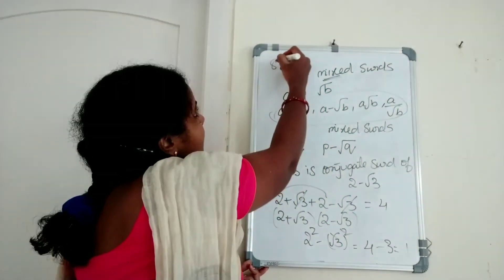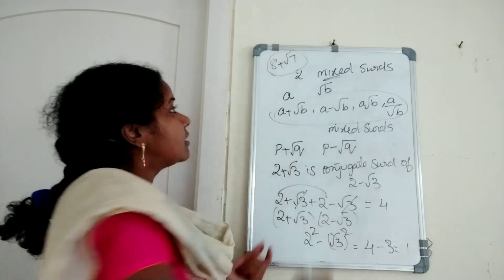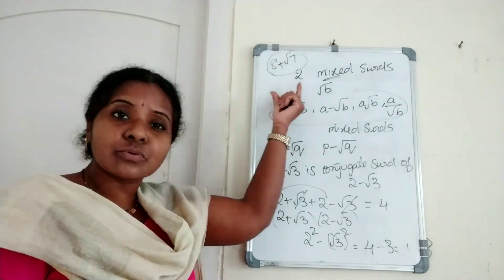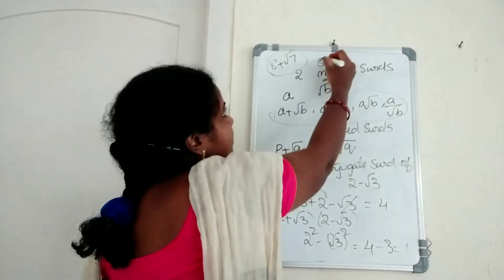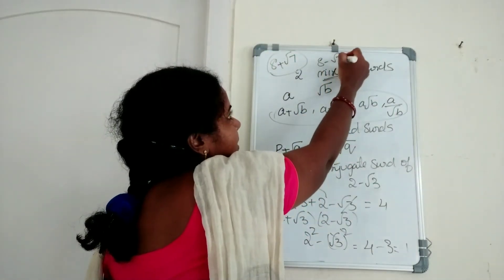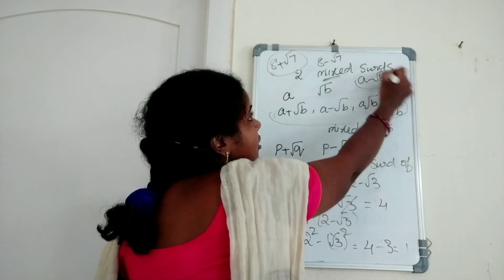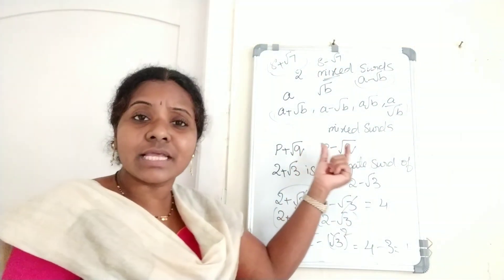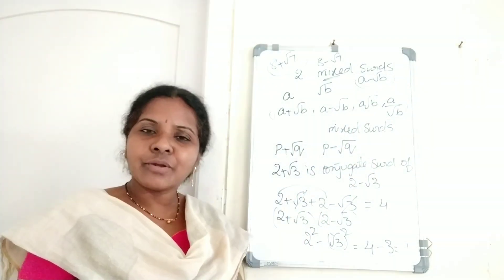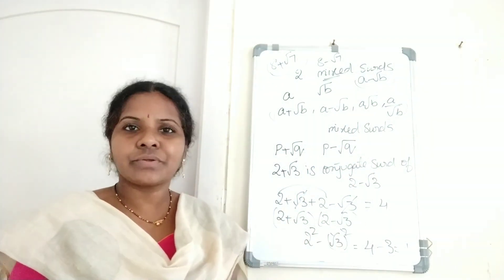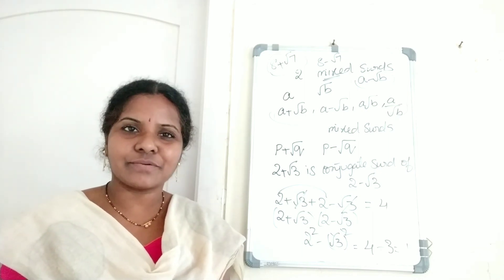So 2 plus root 3 is conjugate to 2 minus root 3, and 2 minus root 3 is conjugate to 2 plus root 3. Suppose 8 plus root 7 — the conjugate of 8 plus root 7 is 8 minus root 7. In general, the conjugate of A minus root B is A plus root B. I hope it is understood. Thank you for watching, and don't forget to subscribe. Thank you.